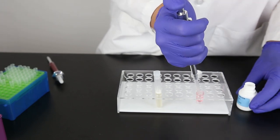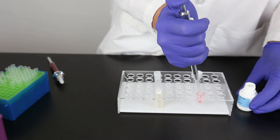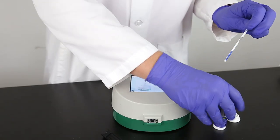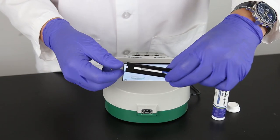Mix by pipetting up and down five times. It is important to mix thoroughly. Place a test strip into the Raptor cartridge. Place the cartridge in the Raptor system.